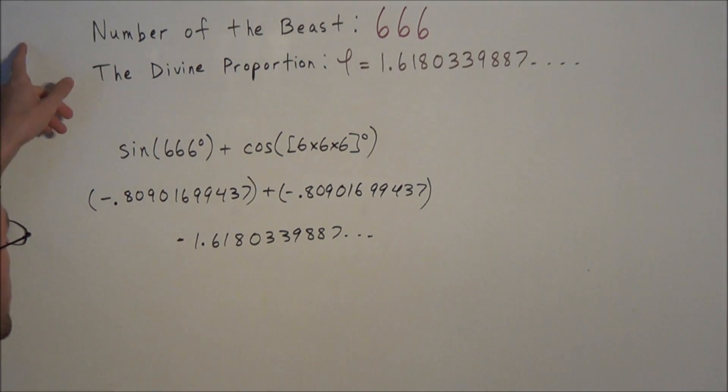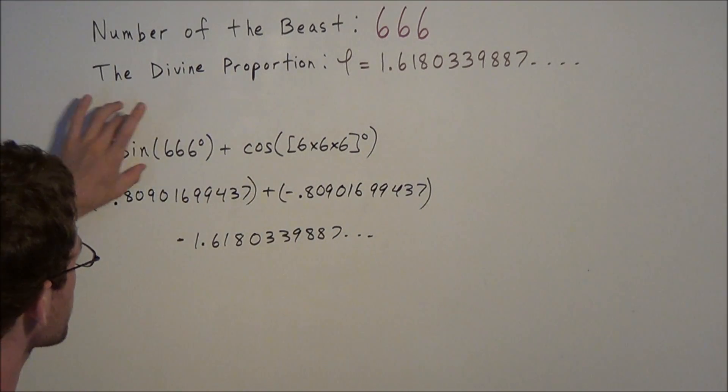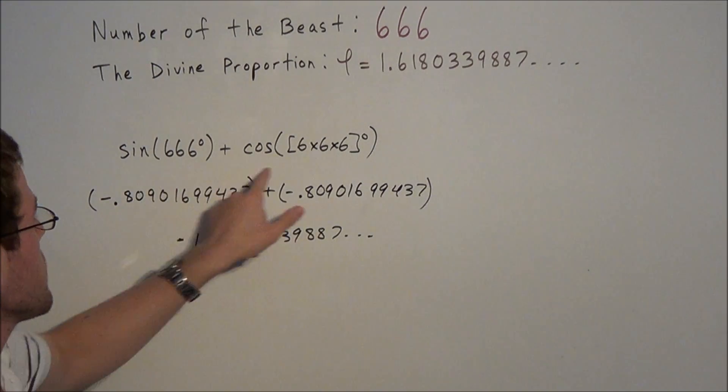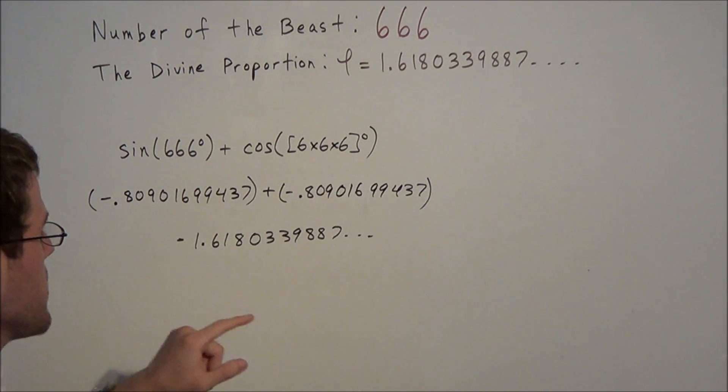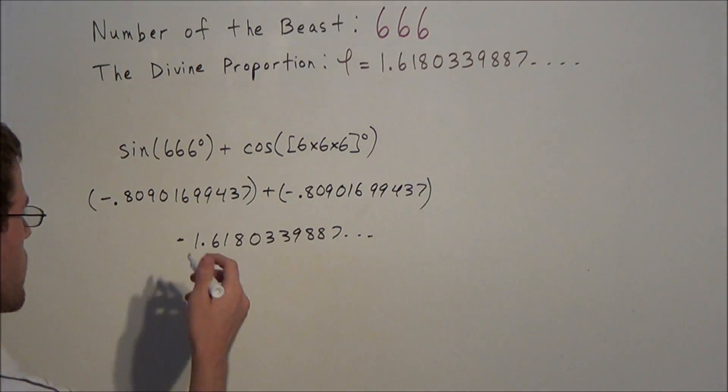But the point is, the mathematical significance of the number of the beast, now we can see it. When we use basic trigonometry with the number of the beast, notice how the value of this expression here is the additive inverse of the golden ratio.